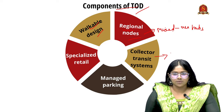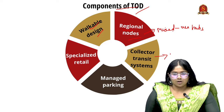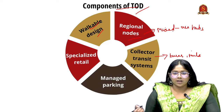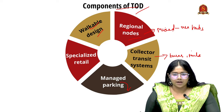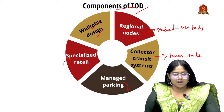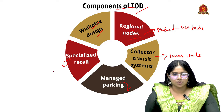Next is a collector transit system, where systems like buses or small rails serve as a supporting system to reach the main transit system. Next is having managed parking — having a limited parking area allotted for the transit system to help passengers reach it efficiently. And next is having specialized retail — near the transit system, retail services like shops can be a matter of convenience.